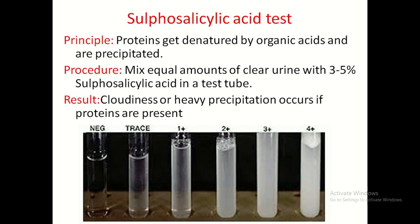The second test for protein detection is the sulfosalicylic acid test. Principle: proteins are denatured by organic acid and precipitated. Procedure: mix equal amounts of clear urine with 3–5% sulfosalicylic acid in a test tube. Results: cloudiness or heavy precipitation indicates presence of proteins. Grading: negative (no cloudiness), trace, mild precipitation (+1), moderate precipitation (+2), then +3, and +4.